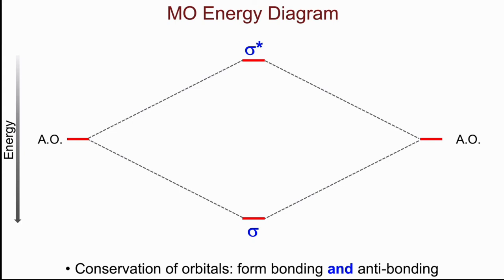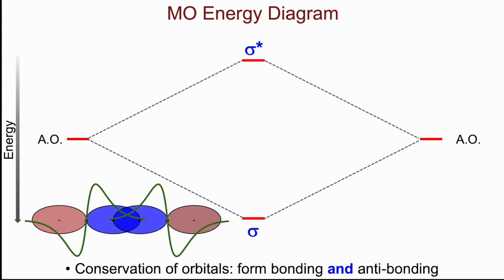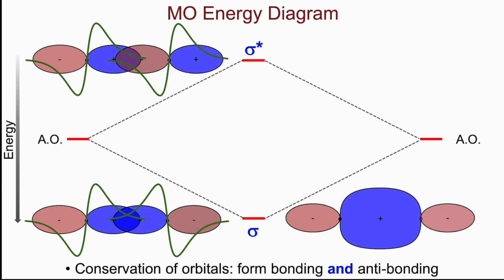So here, again, is the wave function of the bonding showing the overlap and the result. At the top, I show the overlap of the atomic orbitals that's causing the anti-bonding interaction and the result. And the energy separation between the two is called the sigma-sigma-star energy gap.